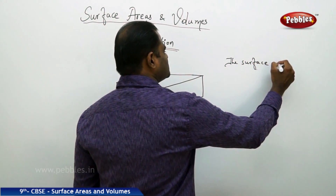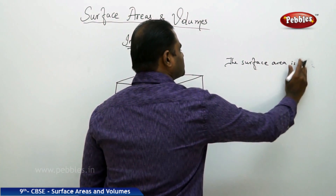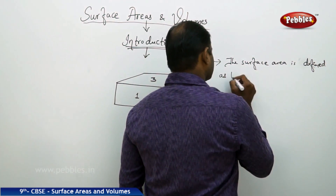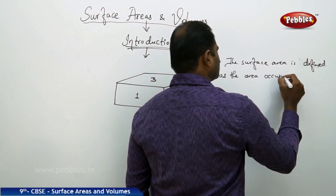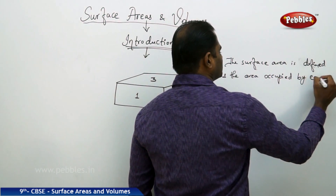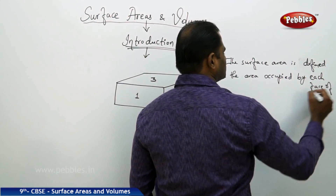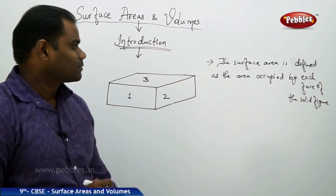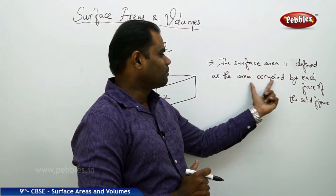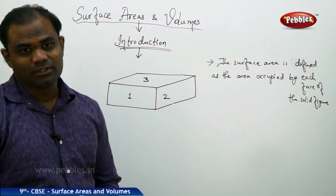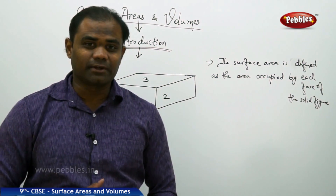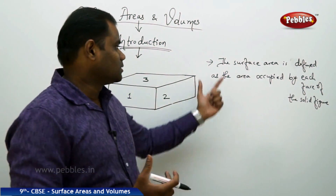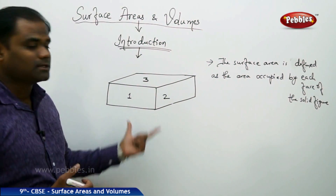The surface area is defined as the area occupied by each face of the solid figure. In this case there are six faces which occupy six different areas. When you add up all six different areas together, the total area is called the surface area of that object — in this case, a cuboid.